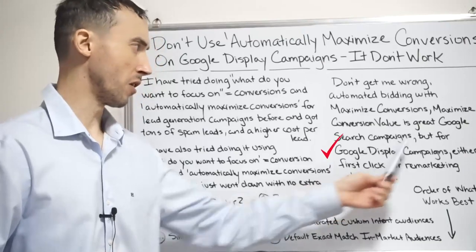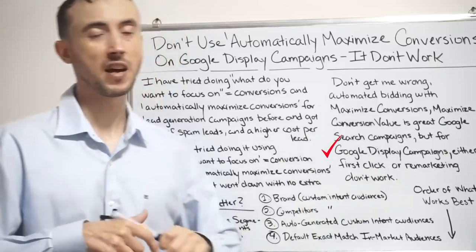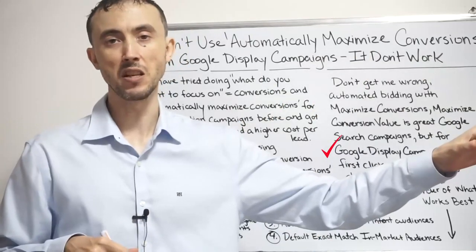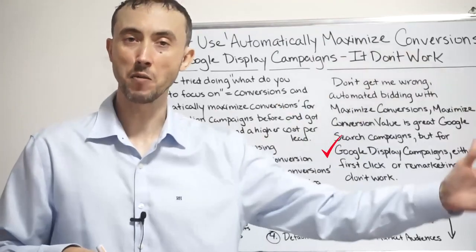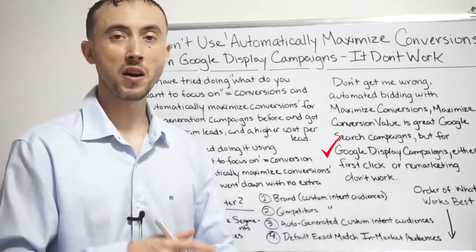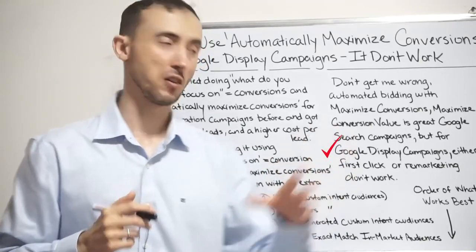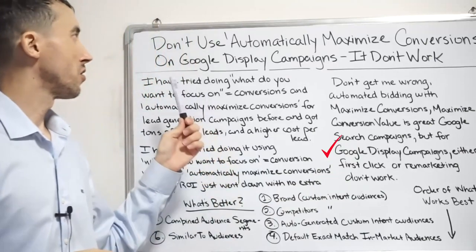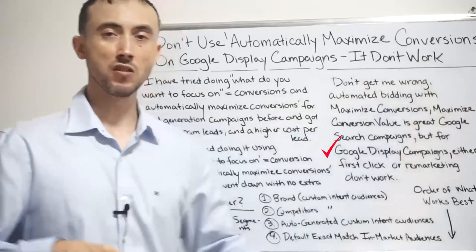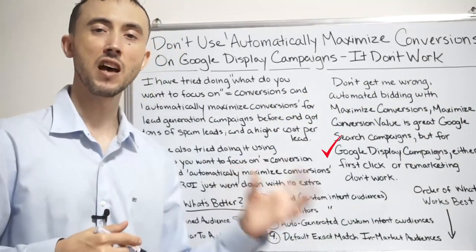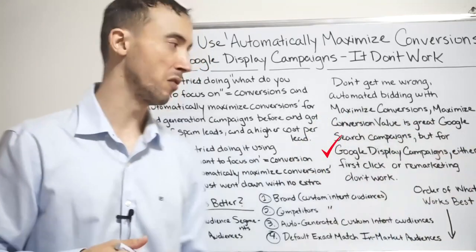But when it comes to Google Display Network campaigns — whether you're doing first-click display campaigns targeting people who've never heard of you or seen your ads, or remarketing to people who have been to your site — you're not going to want to use automated bidding and automatically maximize conversions the way search ads would recommend.